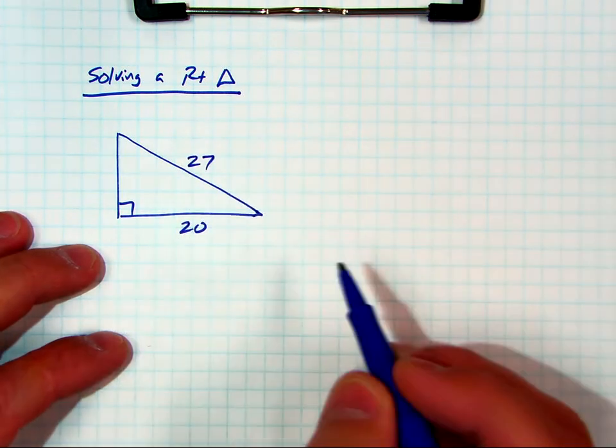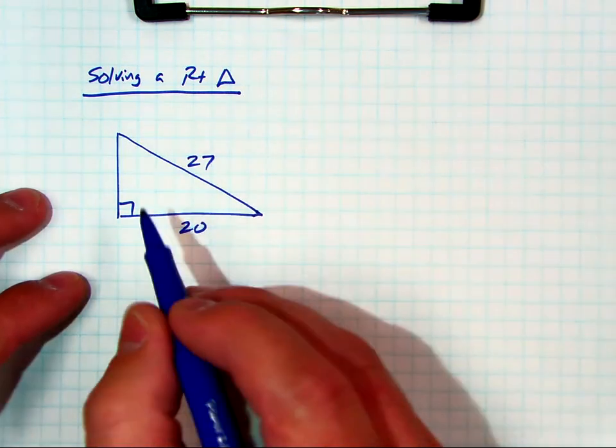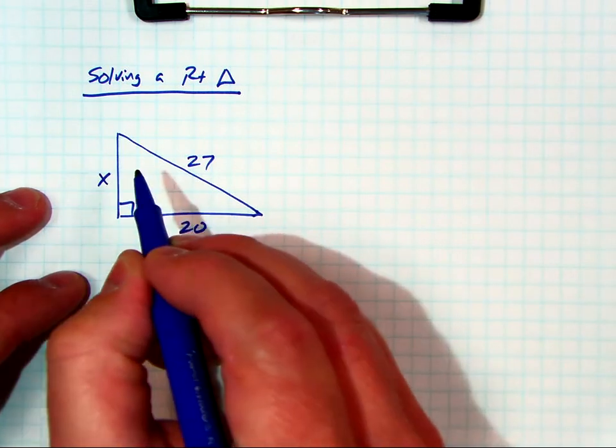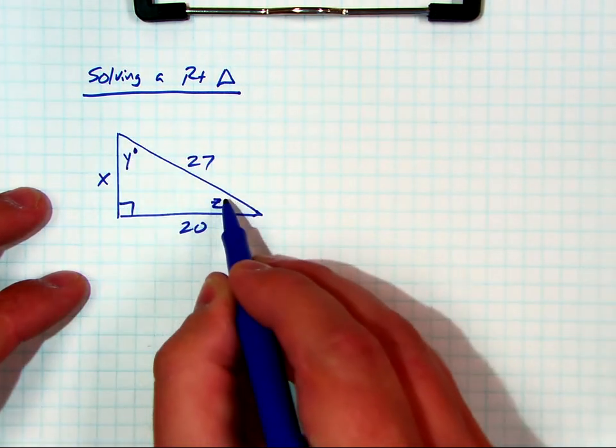I heard a student go like that. All right. We have all the information we need to find out these three things. We're going to say this is side x, this is y degrees, and this is z degrees.